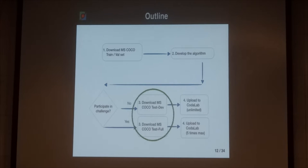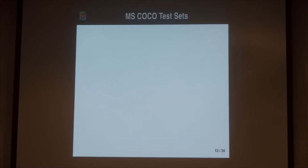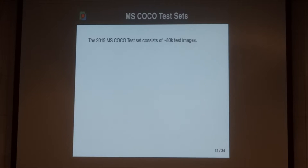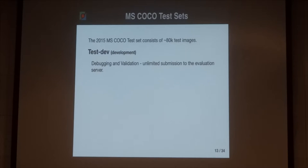Once the competitors have designed their algorithm and used our training set, they would download one of our test sets. The full MS COCO test set contained 80,000 images, which we broke down into four independent sets of 20,000 images. The first test set, called 'test dev' for development, was for debugging and validating code. Competitors could upload their solutions to our evaluation server as many times as they wanted.